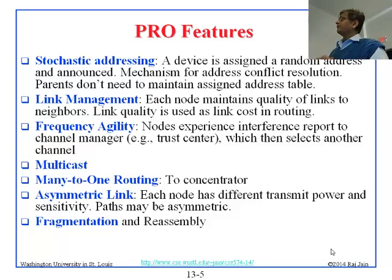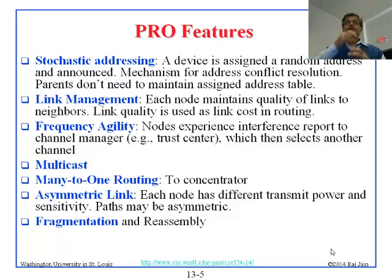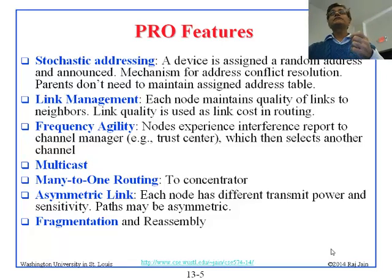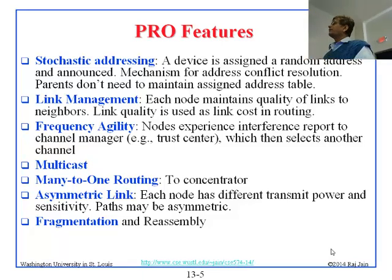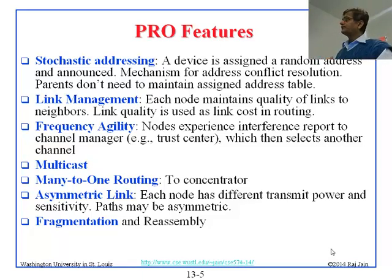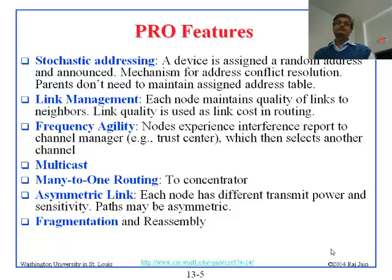Frequency agility: the whole operating frequency can be changed. If somebody notices interference on a channel, they tell the coordinator, and the whole network can move to another channel. Multicast: we can send a message to many destinations — one-to-many routing. Many-to-one routing is the opposite of multicast — many sources, one destination.